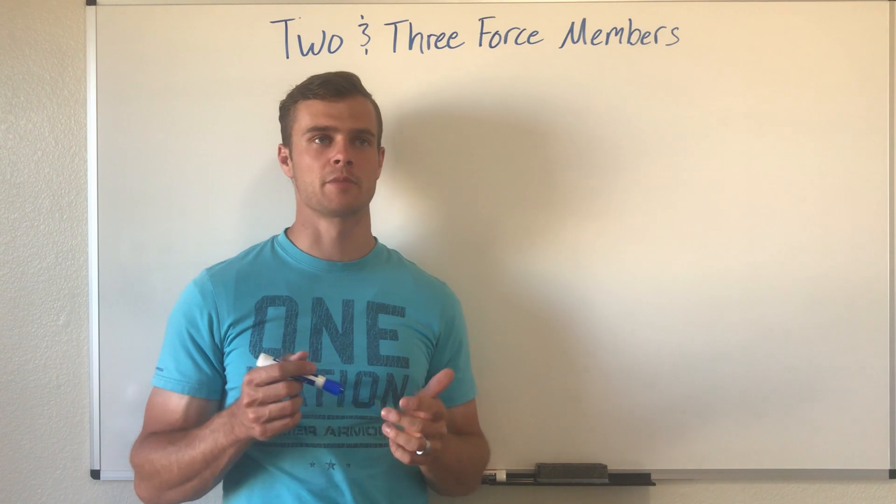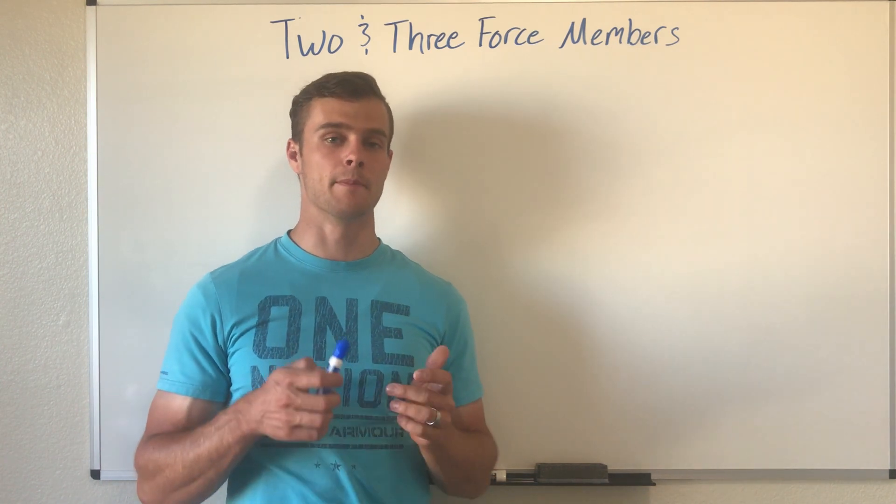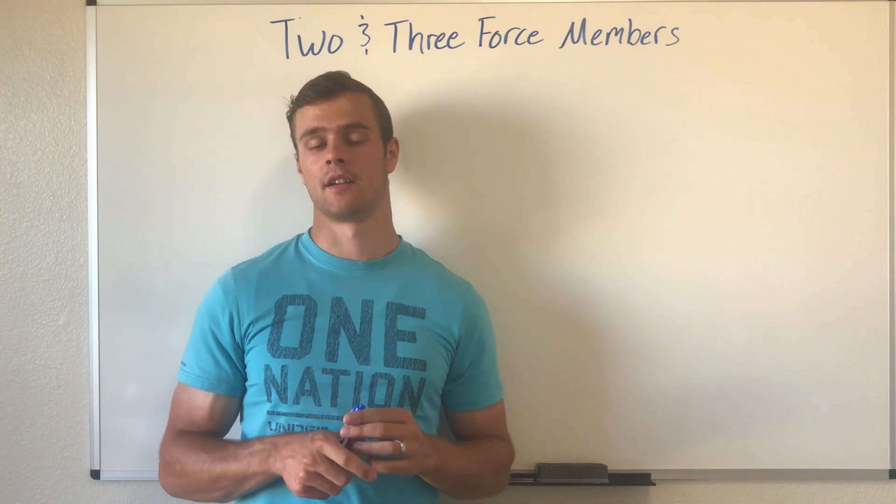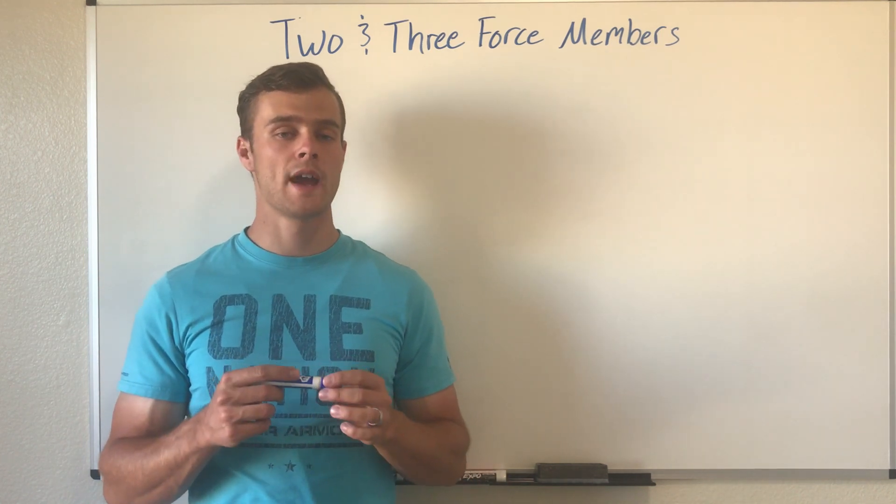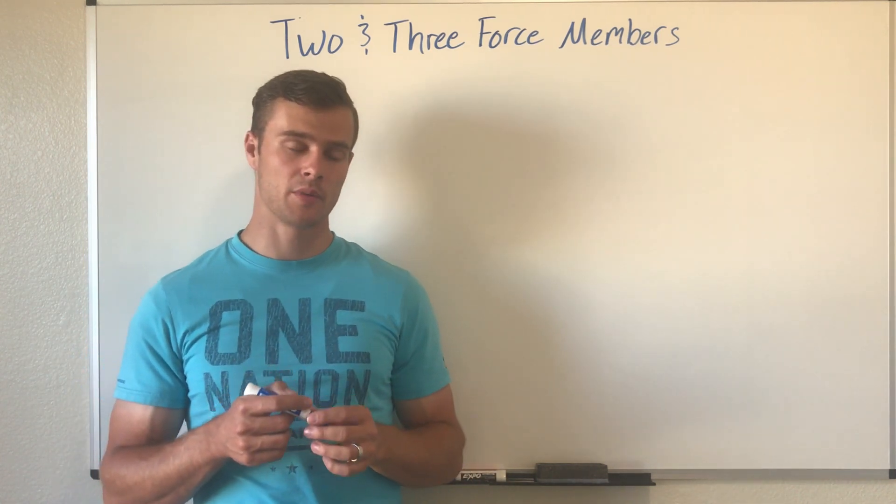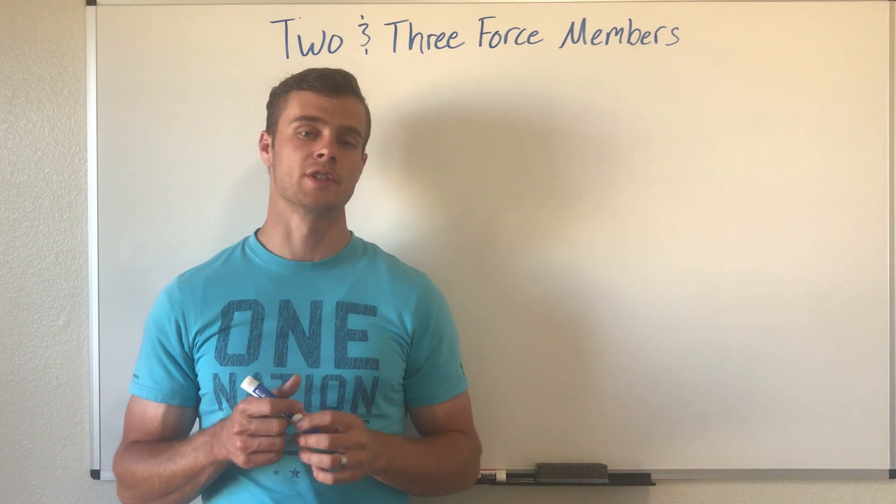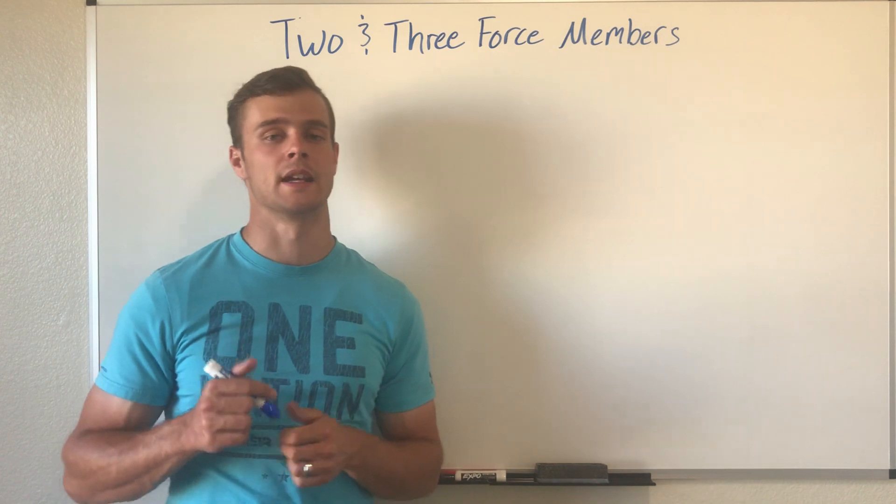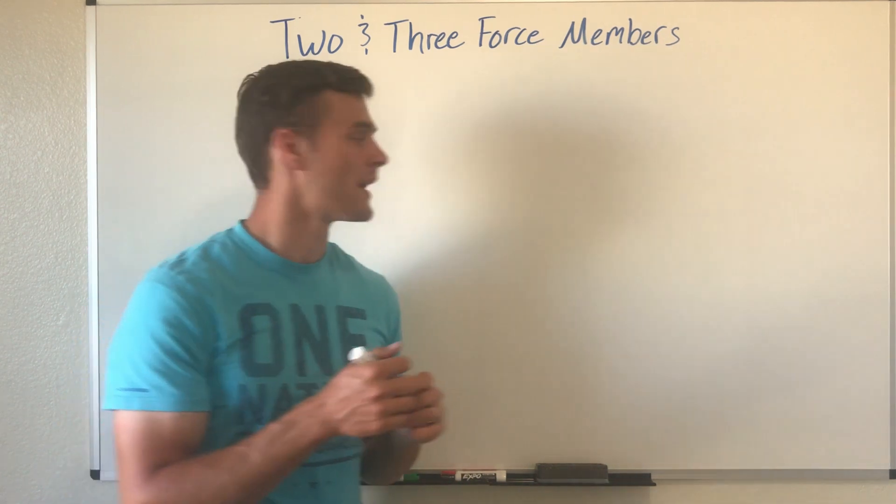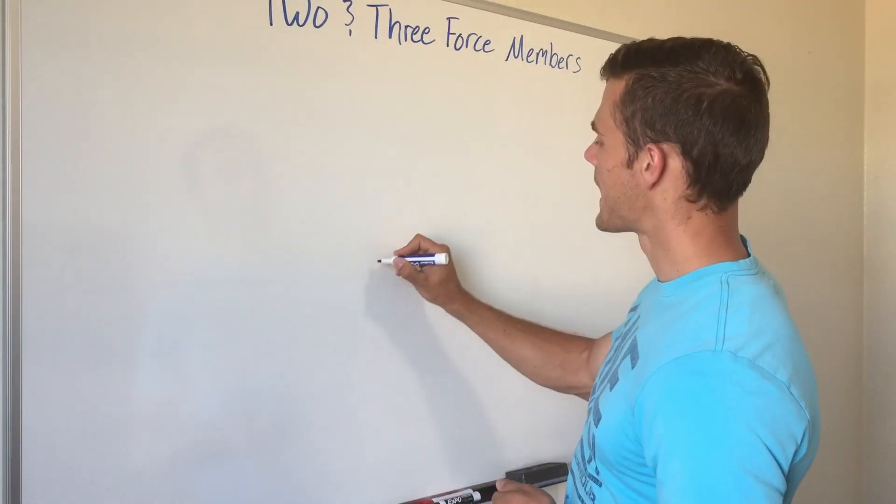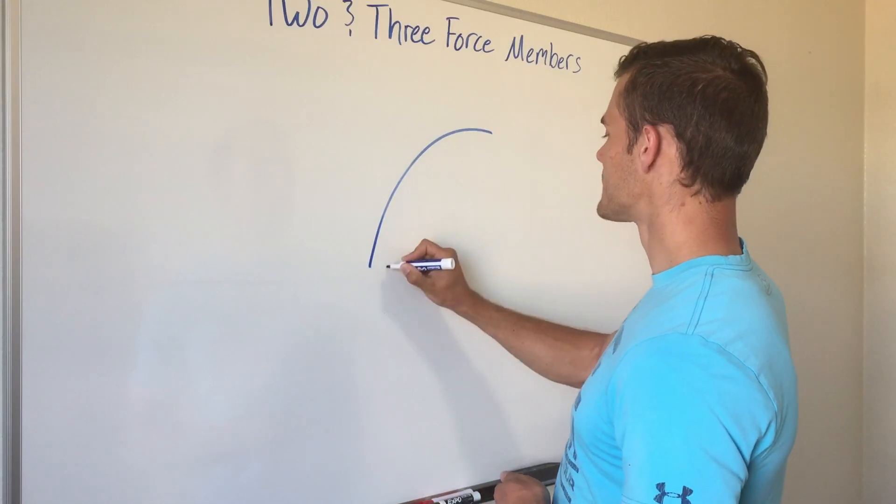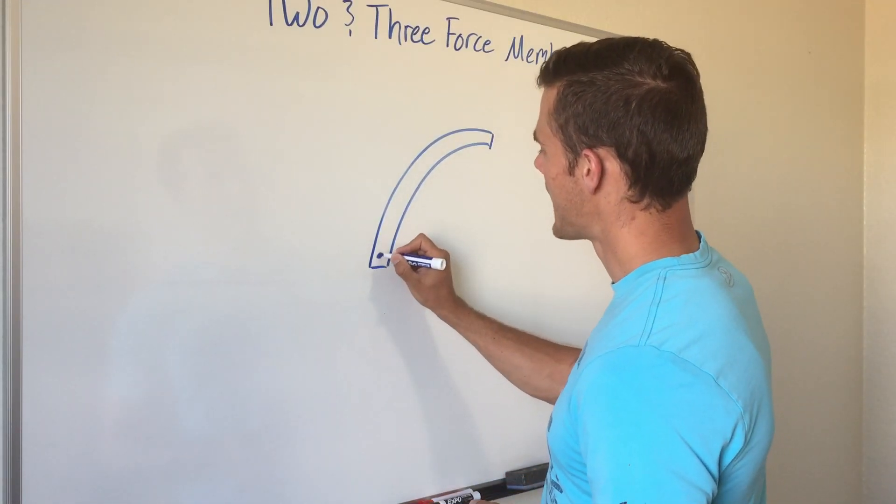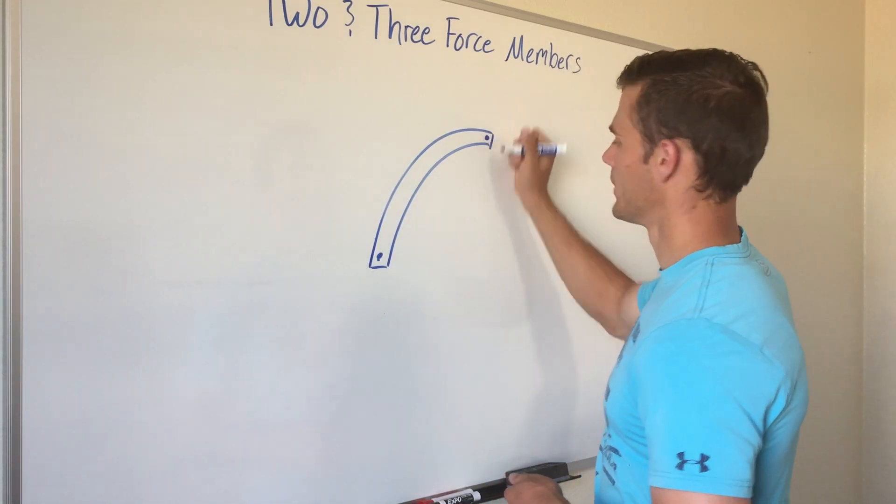So basically a two-force member is what it sounds like. It's a member or an object that only has two forces acting on it. And the way that that object can be in equilibrium is if those two forces are equal in magnitude but opposite direction and along the same line of action. And what that looks like, so let's say we have a curved beam something like this. And we have two forces pulling at this point and at this point.